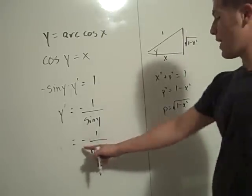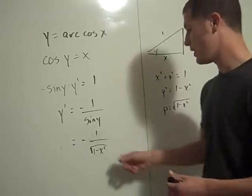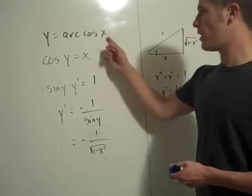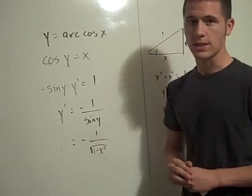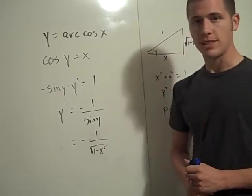And there you have it, minus 1 over the square root of 1 minus x squared is the derivative of y equals arc cosine x. And this is a beautiful application of implicit differentiation.